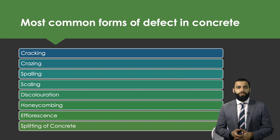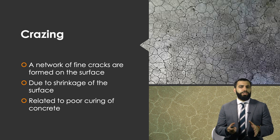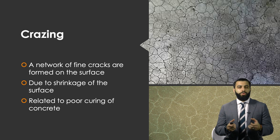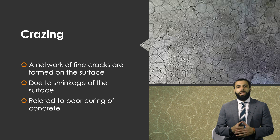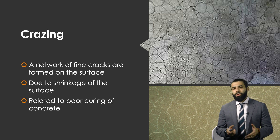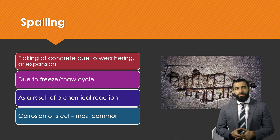Crazing, as you can see in the image, is a small fine network of cracks on the surface of the concrete member. It's very common and results from shrinkage — or contraction — of the surface, where the surface loses some of its water and contracts. On a construction site, crazing is most commonly a result of poor curing of the concrete, so proper curing is essential to avoid this issue.